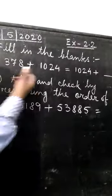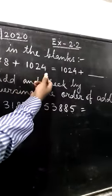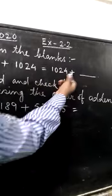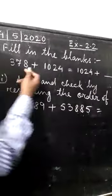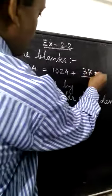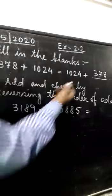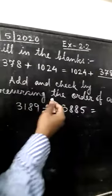So 378 plus 1024 gives you 1024 plus, students, what will be the answer? It will be 378. As in our previous class, we discussed that a plus b equal to b plus a by commutative property of addition.